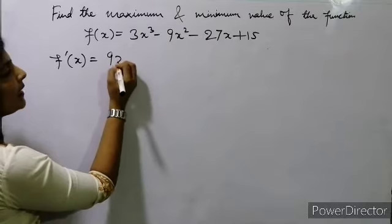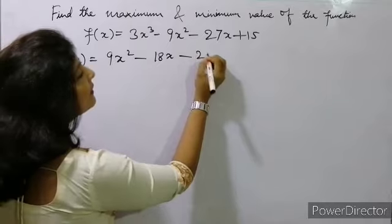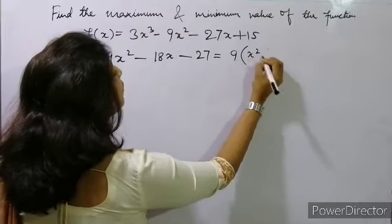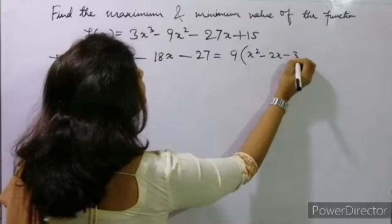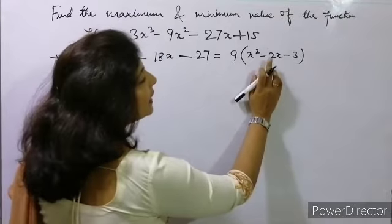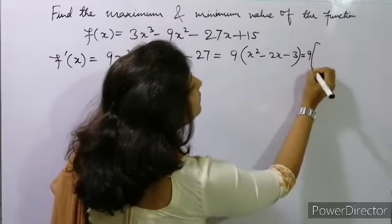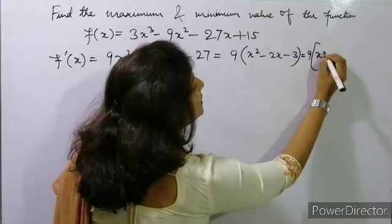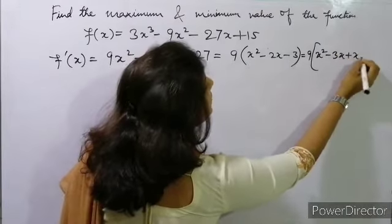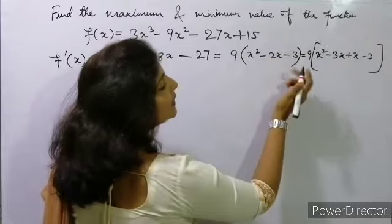So f'(x) = 3×3 = 9x² - 9×2 = 18x - 27. Now we can take 9 as common, so it will be 9(x² - 2x - 3). For x² - 2x - 3, we split: 9(x² - 3x + x - 3). Here -3x + x = -2x, which checks out.